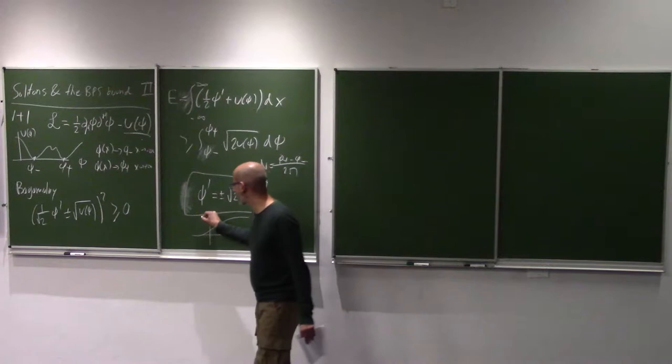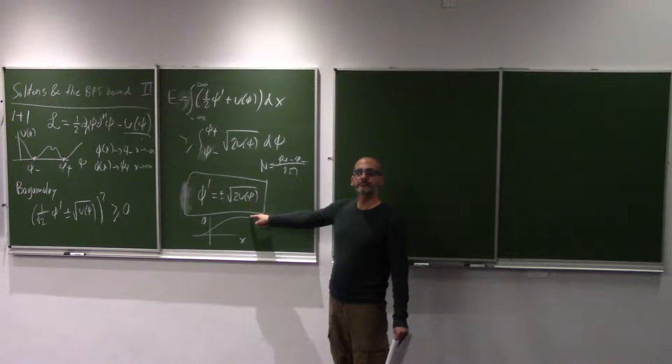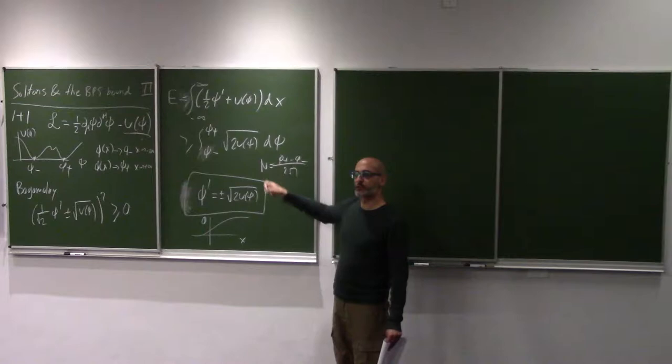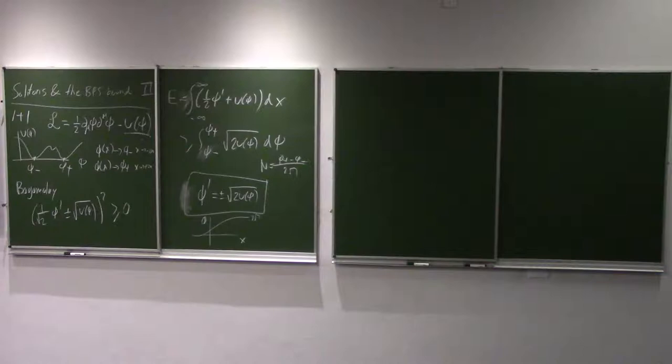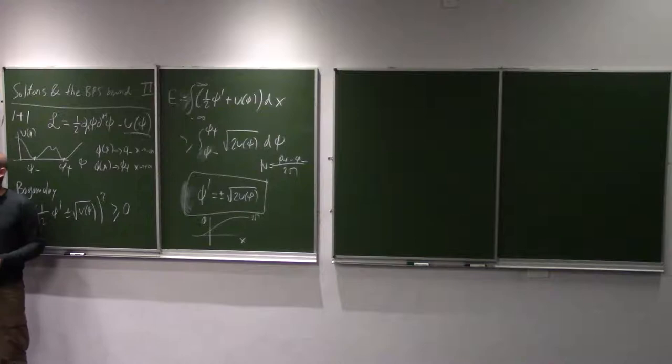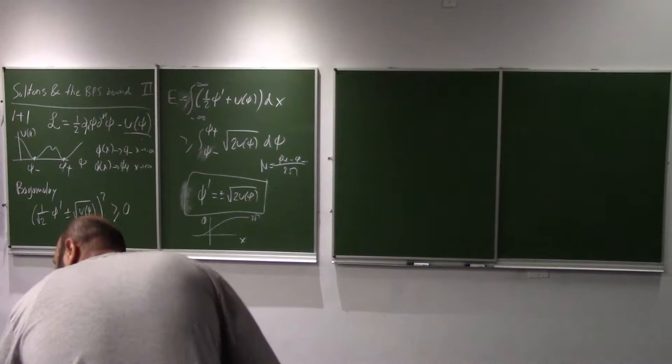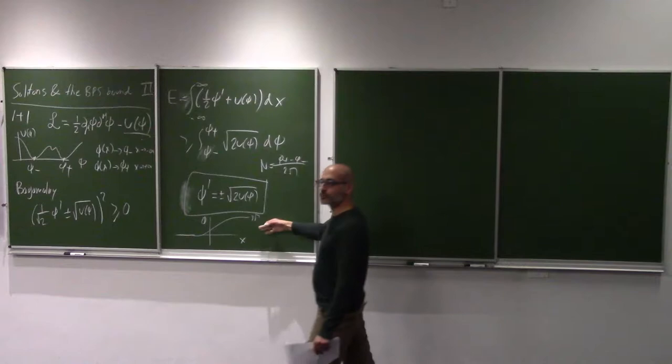This first-order Bogomolny equation is easier to solve than the generic equations of motion. We showed how it can be solved in the special case of sine-Gordon. What we found, as perhaps expected, is a kink solution which interpolates between two possible vacua. We chose one of them to be phi equals zero, so it interpolates between phi equals zero and some nonzero value — corresponding to n equals one, where that value is 2π. The solution phi was proportional to some arctan or exponential of (x minus a).